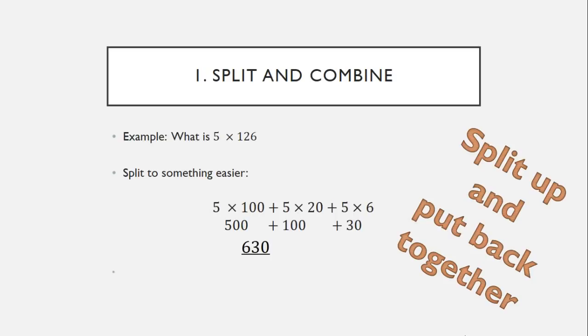5 times 20 is giving you 100 and 5 times 6 giving you 30. We add that all together and that gives us 630. So if you see a multiplication, you're not really sure how to do the whole multiplication in one step, split it up and you can recombine it. With some practice, you'll get really quick at that.